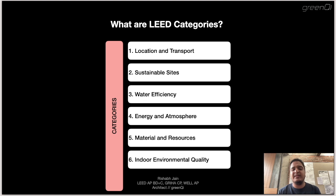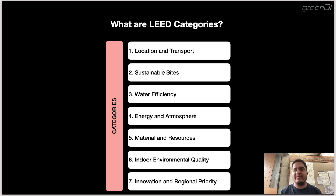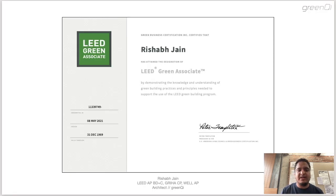Sixth is Indoor Environmental Quality, which deals with increasing the quality of the indoor environment through indoor air quality, occupant comfort, acoustic design, thermal comfort, and access to daylight and views. Finally, the seventh category is Innovation and Regional Priority, which incentivizes the project team to earn credits that meet specific needs for a region or climate, creating room for innovation in sustainability and rewarding it.